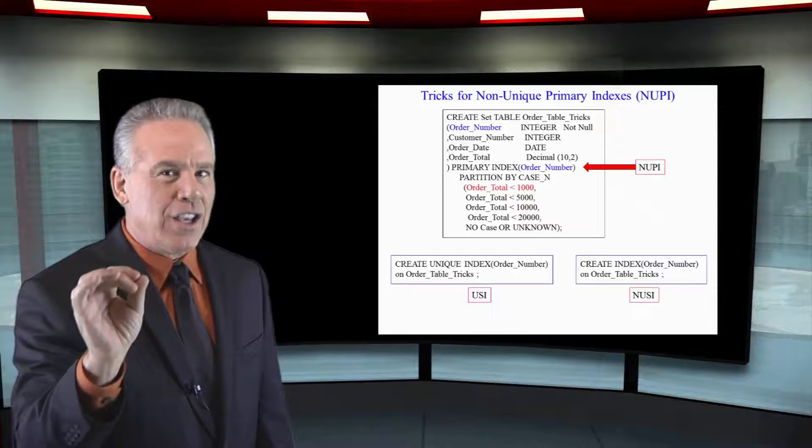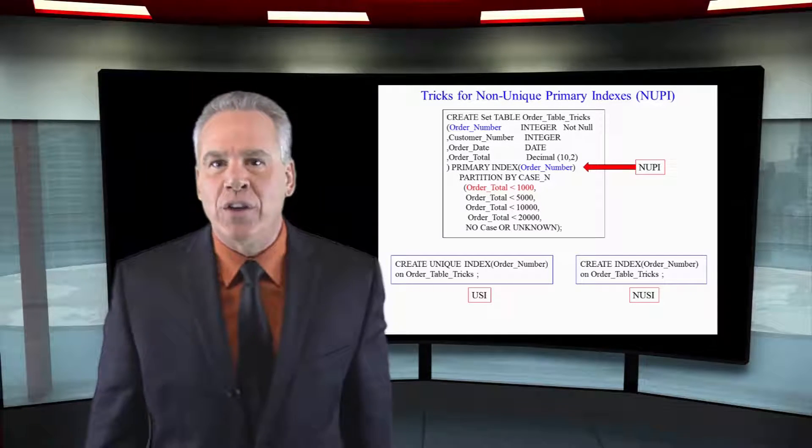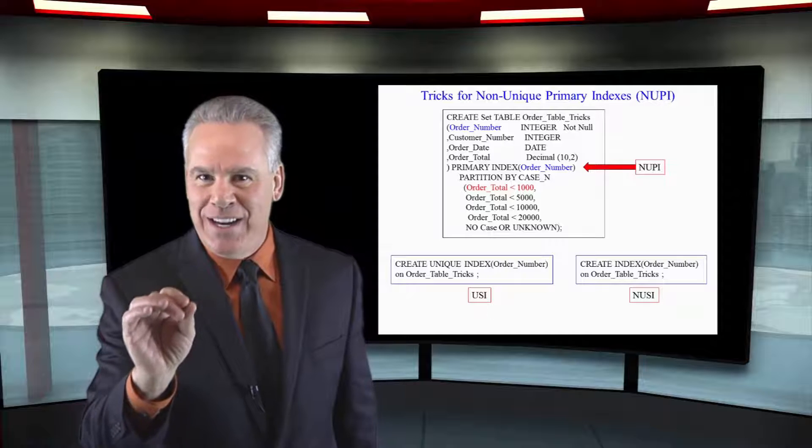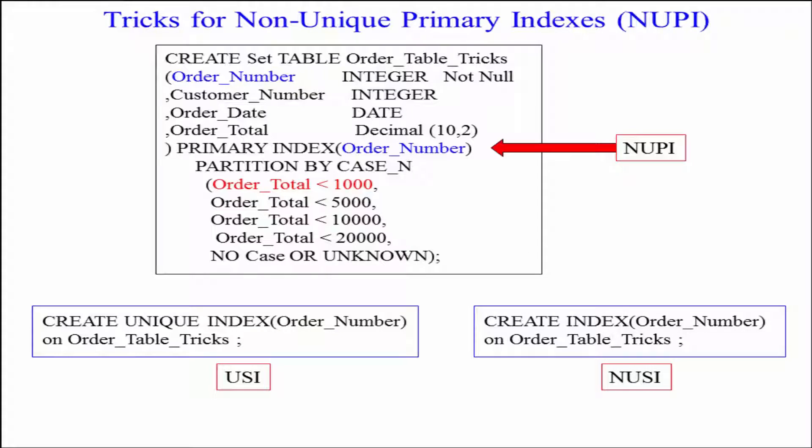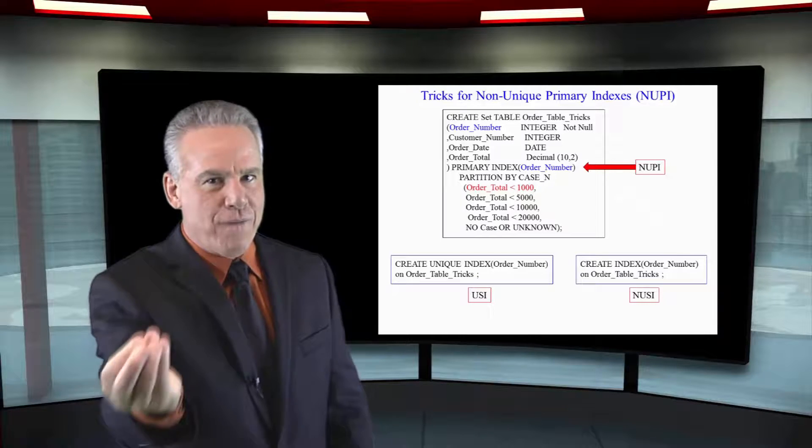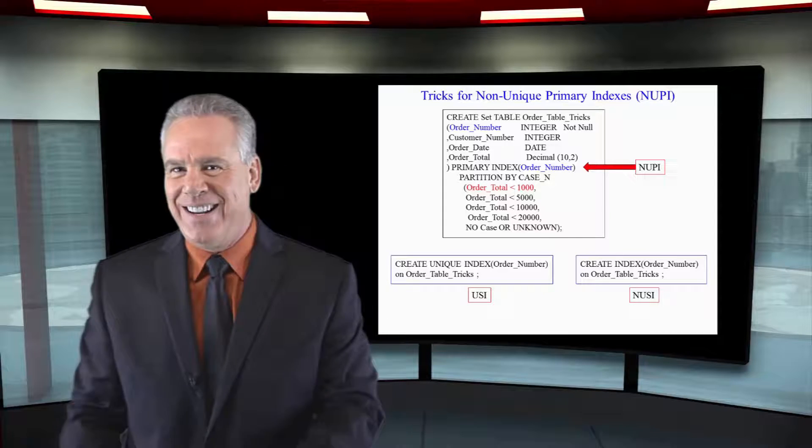If you can't really make it unique because your order numbers aren't unique, you can create a non-unique secondary index. It won't be quite as fast, but this is the only time I've ever seen someone create a secondary index on top of a primary index, but Teradata has this working perfectly, but only on tables that are partitioned.